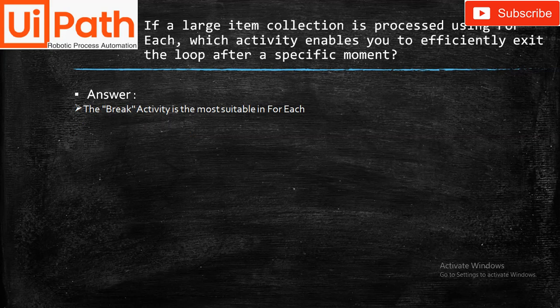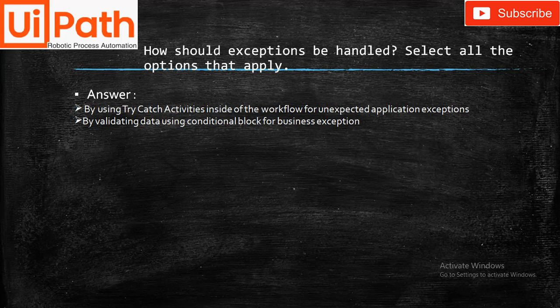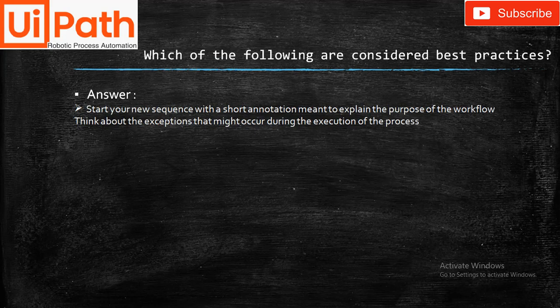How should exceptions be handled? Select all that apply. Answer: Using the Try Catch activity inside the workflow for unexpected application exceptions, and by validating data using conditional blocks for business exceptions.